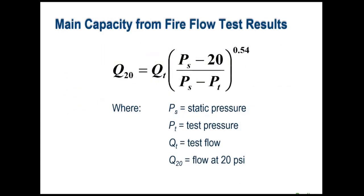The main capacity number typically comes from hydrant flow test results. ISO provides a formula to take the static pressure, the pressure during a test, and the measured flow, and scale it down to a 20 psi residual. It's a decent formula but less precise than a hydraulic model, because the physical test only captures conditions at one moment in time. The model can account for valves that open when pressure drops, pumps that kick on, and other dynamic factors that a field test cannot.